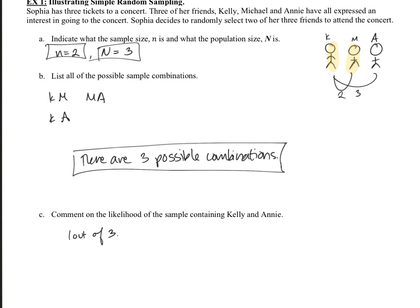And in fact, the probability of obtaining any of these sample sizes have a one in three chance of happening. Each of them would only occur one out of three times. So one out of three.